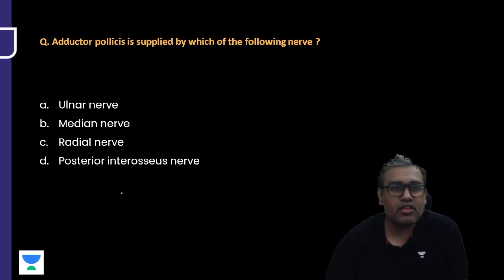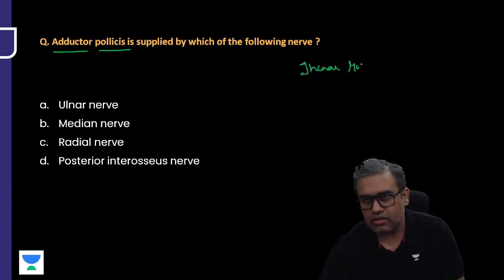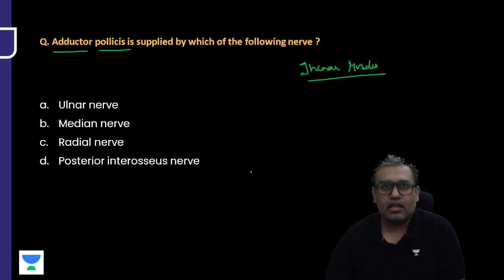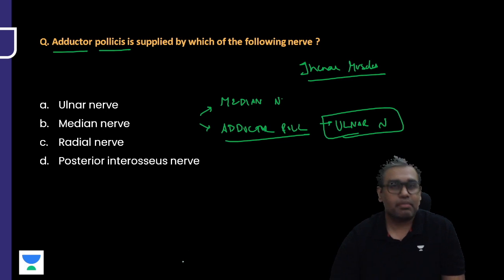A question about the adductor pollicis. Pollicis means the thumb, adductor means adduction of the thumb. There is a muscle which causes adduction of the thumb. Obviously it is one of the thenar muscles, one of the four thenar muscles. Thenar muscle adductor pollicis supplied by which of the following nerve? It is a very, very repeated question. We always know and study that thenar muscles are basically on the thumb side, so they are supplied mainly by the median nerve. But we always have an exception in medicine, so here also is no exception. All the muscles are supplied by median except the adductor pollicis. This muscle is supplied by the ulnar nerve, a deep branch of ulnar.